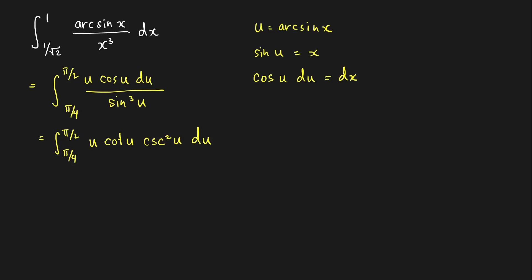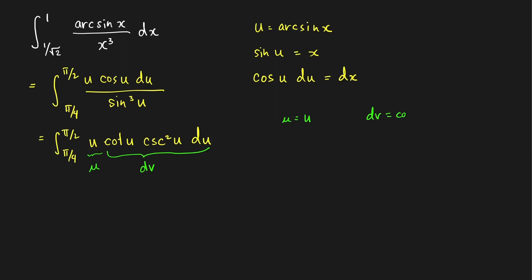Now let's use integration by parts to evaluate this. When using integration by parts, one technique is to choose dv as the most complicated part of your integrand that can be integrated. In this case, we can choose cotangent(u)·cosecant²(u) as our dv, and this is already in the form ∫μ dv. So μ = u and dv = cotangent(u)·cosecant²(u) du, giving dμ = du. To find v, think of cotangent(u) as z, so this is the negative of dz, and therefore v = −z²/2 = −cotangent²(u)/2.